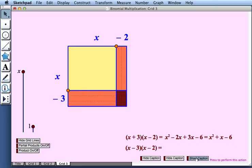So if I look at that that means I have x squared minus 2x minus 3x and then plus 6. So altogether that's x squared minus 5x plus 6.